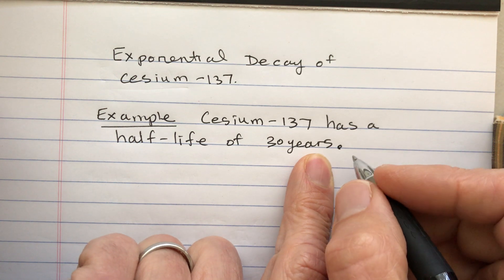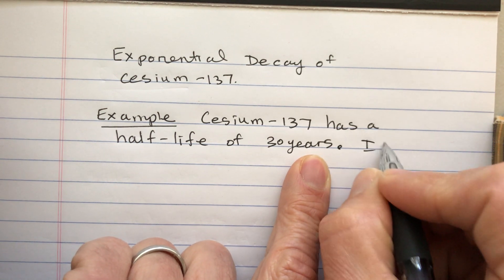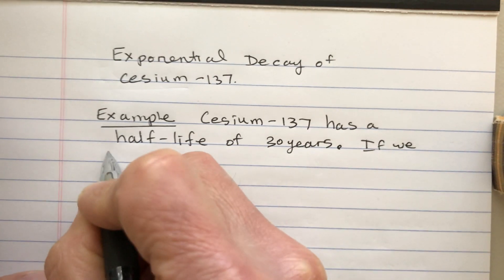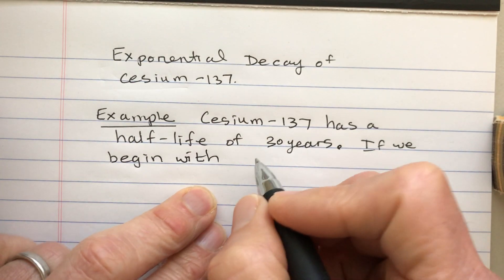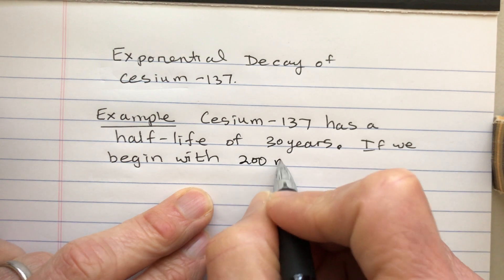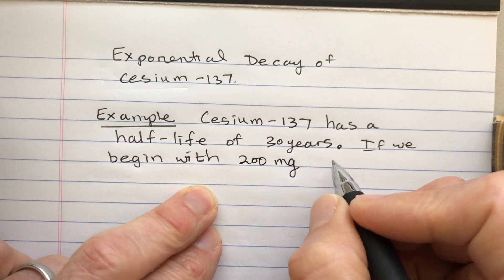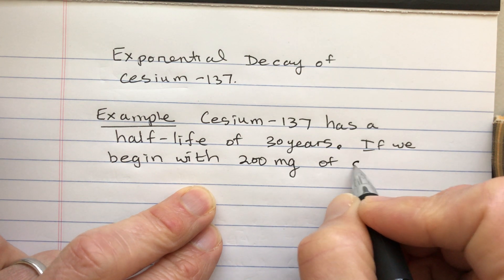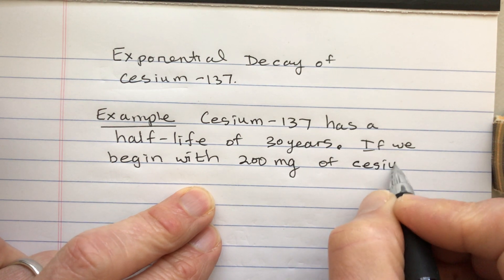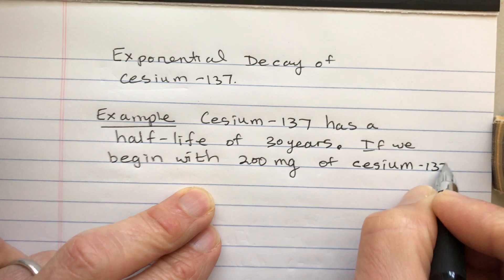If we begin with 200 milligrams of cesium-137, how long will it take until only one milligram remains?